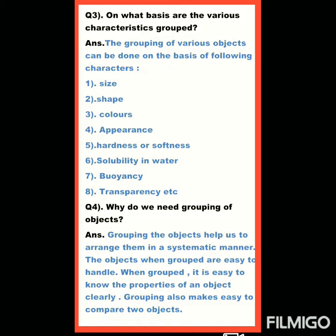The characteristics are: first, size; second, shape; third, color; fourth, appearance — appearance means lustre, shining of the object, lustrous है या non-lustrous material है; fifth, hardness और softness; sixth, solubility in water — solubility check करते हैं, insoluble है, soluble है, miscible है या immiscible है।